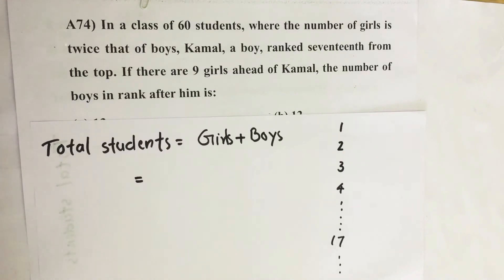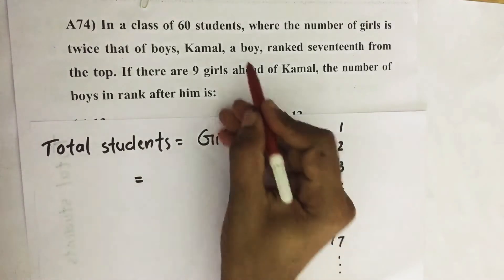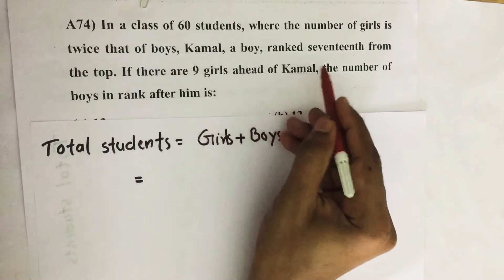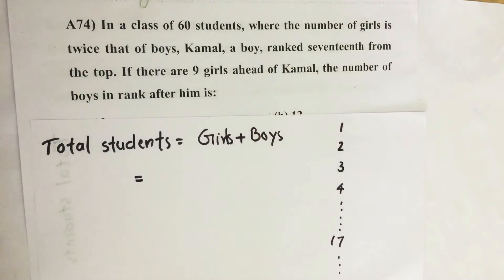In a class of 60 students, where the number of girls is twice that of boys, Kamal, a boy, ranked 17th from the top. If there are 9 girls ahead of Kamal, the number of boys in the rank after him is.